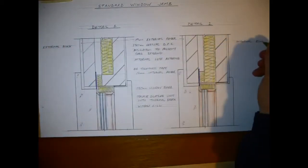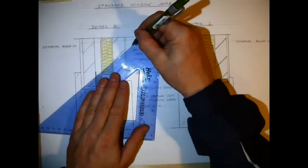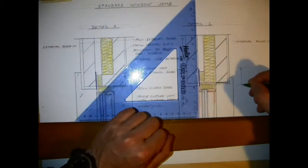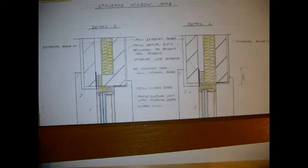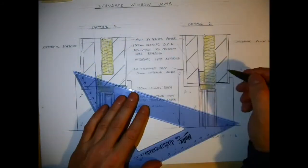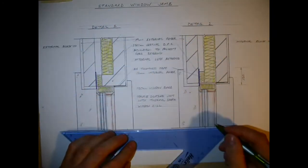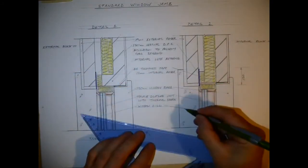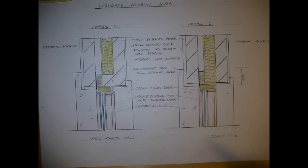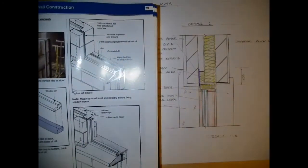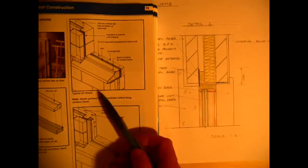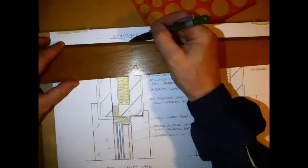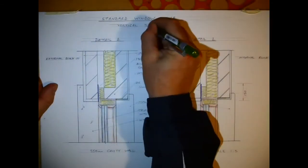That has to be built in. If you refer to the very first picture you'll see how it meets with the DPC at the head of the window as well. So when the jams are being built, the DPC has to be placed in there and rolled up as the building progresses. Again, just refer back to our original drawing vertical section.